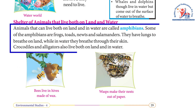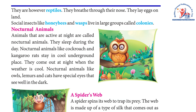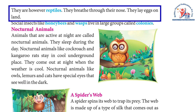Animals that can live both on land and in water are called amphibians. Some amphibians are frogs, toads, newts, and salamanders — they have lungs to breathe on land, while in water they breathe through their skin. Crocodiles and alligators also live both on land and in water; however, they are reptiles and breathe through their nose. They lay eggs on land.